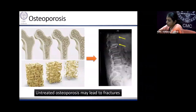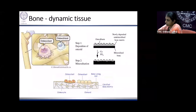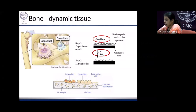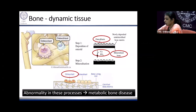Osteoporosis is one of the most common metabolic bone diseases, and untreated osteoporosis may lead to fractures. I will not be covering this in detail because osteoporosis is essentially clinically silent, and postmenopausal women and elderly men are recommended to be screened. As we know, bone is a dynamic living tissue wherein there are osteoblasts that work towards mineralization through deposition of calcium and phosphate in the osteoid, leading to the formation of mineralized bone. There are also osteoclasts that are constantly resorbing bone, so any abnormality in these processes can lead to a metabolic bone disease.